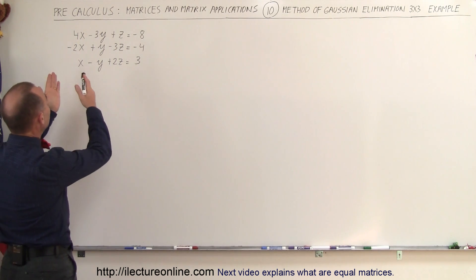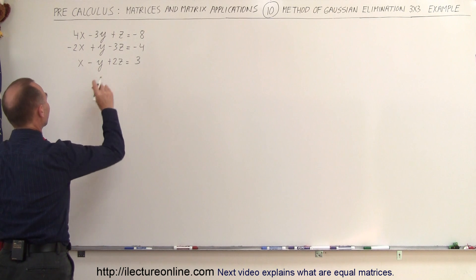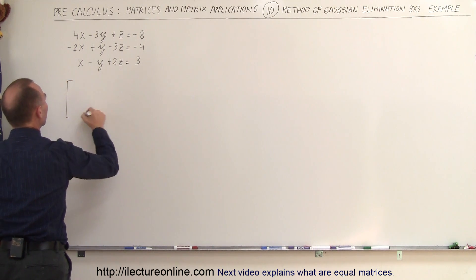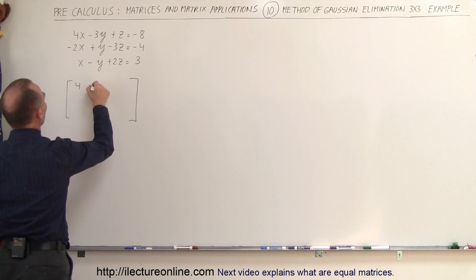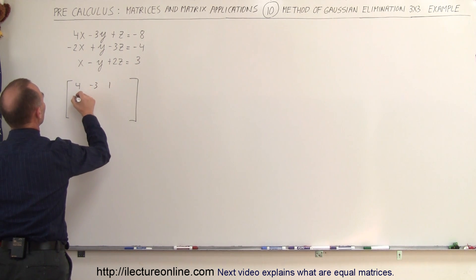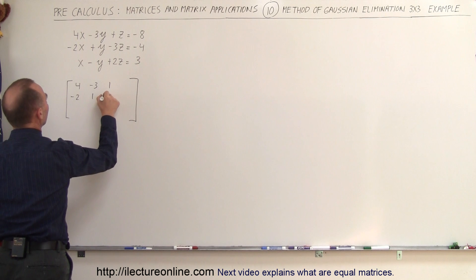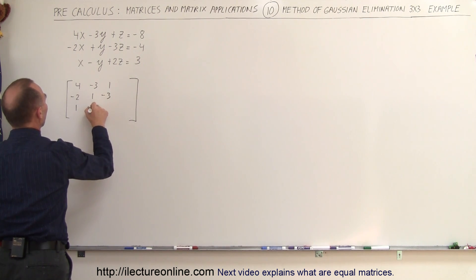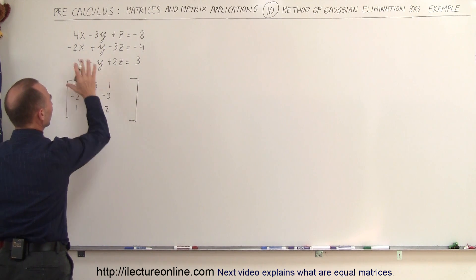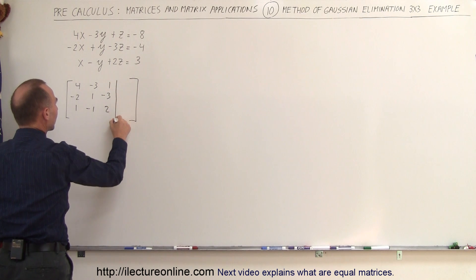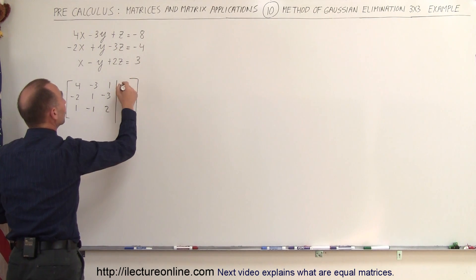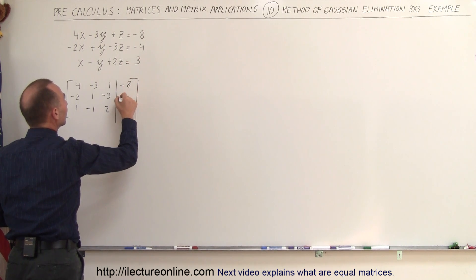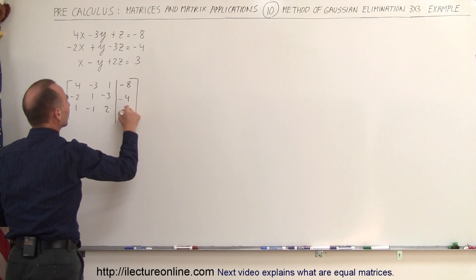We take the coefficients of the x, y, and z variables and put them in an augmented matrix. That will look as follows: we have a 4, a minus 3, a 1, a minus 2, a 1, and a minus 3, a 1, a minus 1, and a 2 — those are the coefficients of x, y, and z. Then we draw a line to separate them from the numbers to the right side of the equals sign — the constants: a minus 8, a minus 4, and a 3.